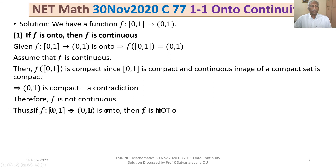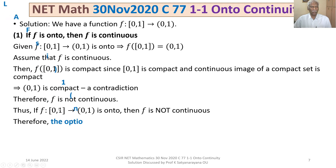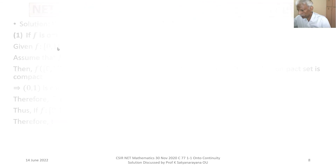Thus, if f is a function from [0,1] to (0,1) and is onto, then f is not continuous. Therefore, option 1 is false, and it is one of the answers, because we have to identify the false statements. We continue to option 3.